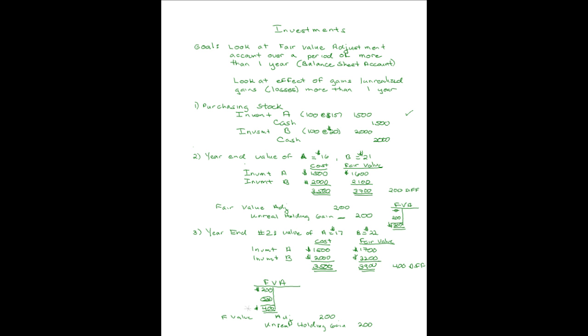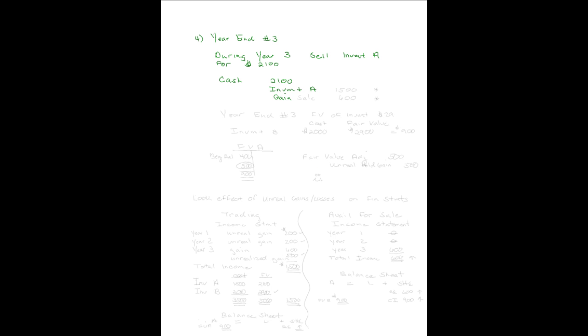What was our balance in Investment A? I have $1,500 in Investment A — that's what I credit. I'm taking it out at cost. Then I record a Gain on Sale of Investment for the difference: $2,100 minus $1,500 = $600. I picked up cash at the amount received but relieved Investment A at its cost. That account had never been changed.